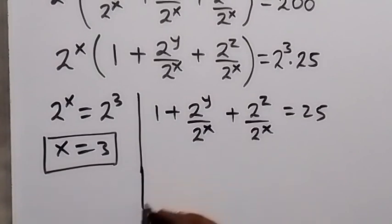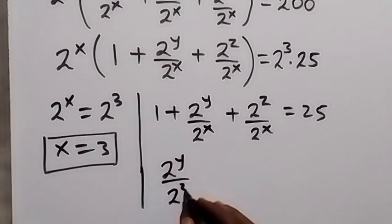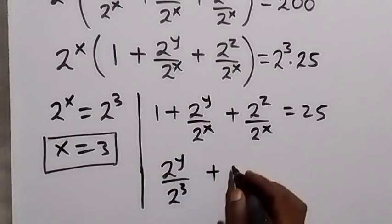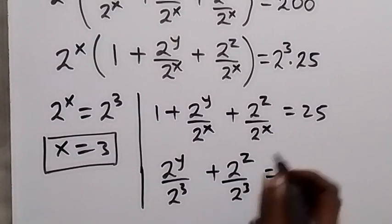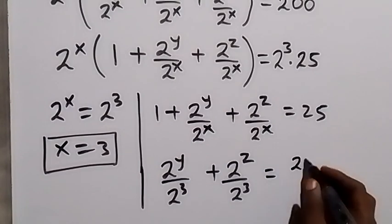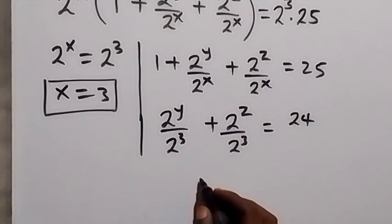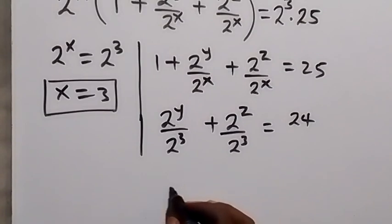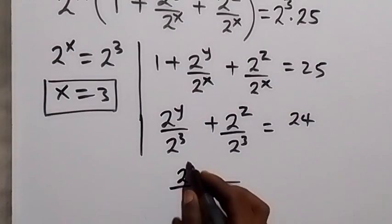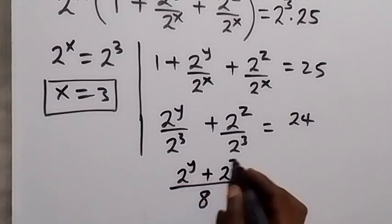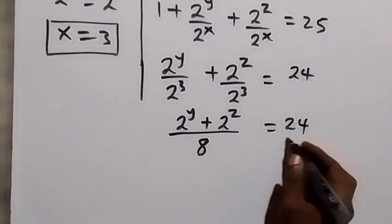This now becomes 2 raised to power y divided by 2 raised to power 3 (since x is now 3), plus 2 raised to power z divided by 2 raised to power 3, equals 25 minus 1, which is 24. We have 2 raised to power 3, that's 8, so this becomes 2^y plus 2^z, equal to 24.